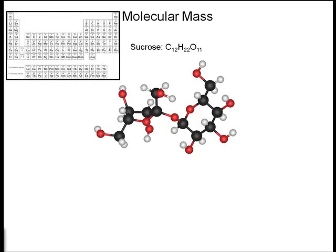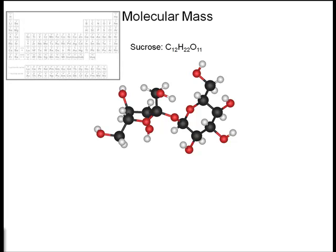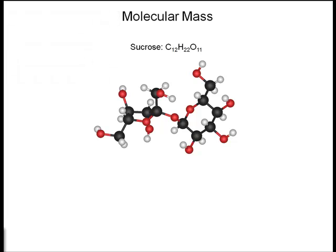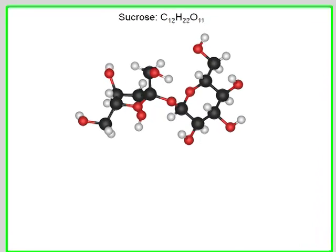Sucrose has 12 carbons, 22 hydrogens, and 11 oxygens. From the periodic table, we can find the atomic weight of each of these atoms.